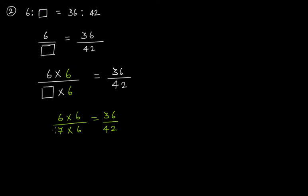So this missing number is actually 7. The ratio is 6 to 7. For those wondering if there's a quick way to find this number: simply divide. Since 42 is the result, if you divide 42 by 6 it gives you 7, and that means the missing number here is 7. Or simply use the trial method.